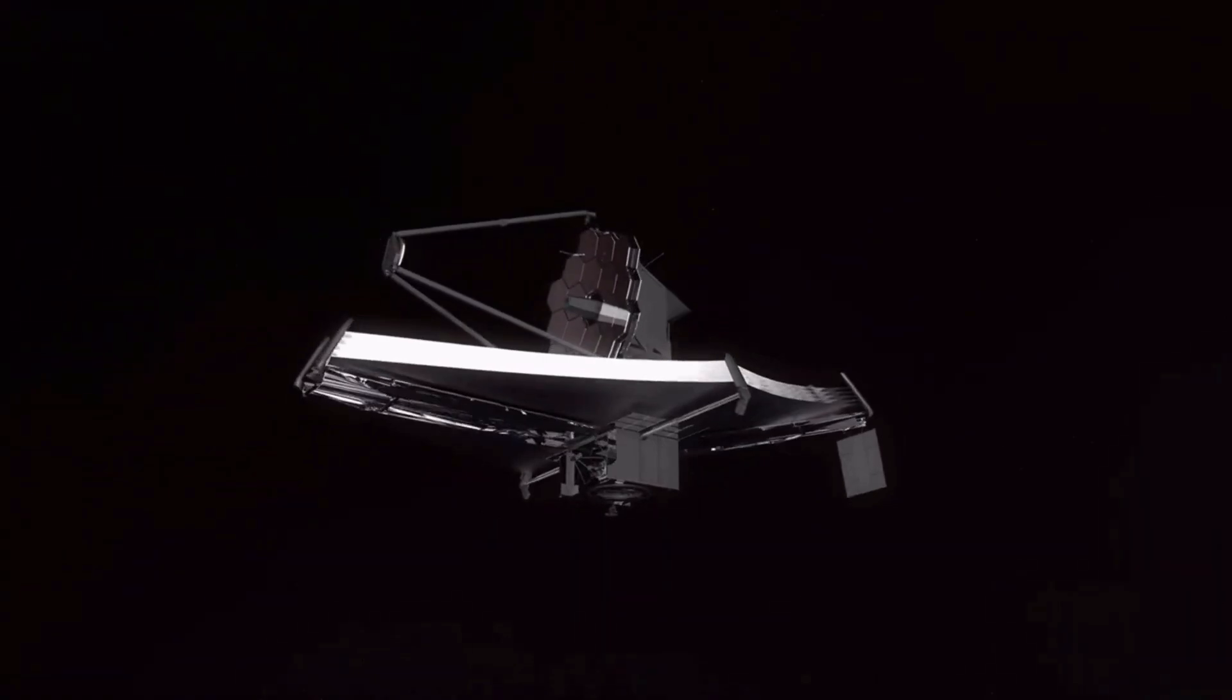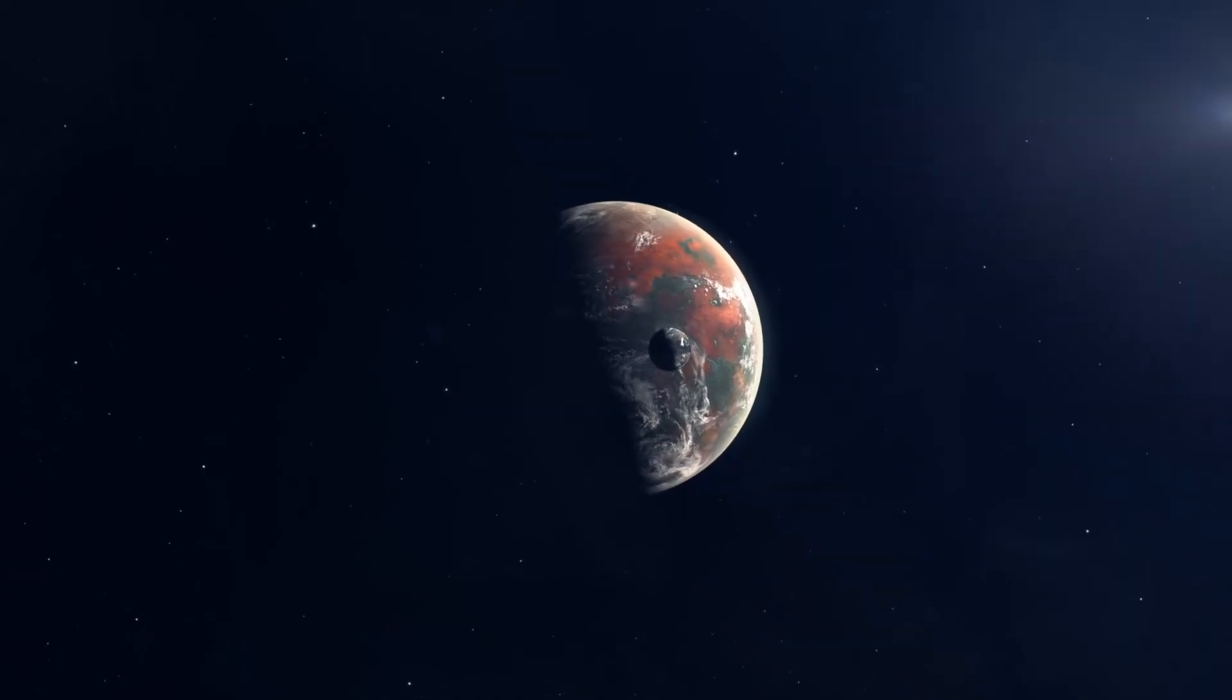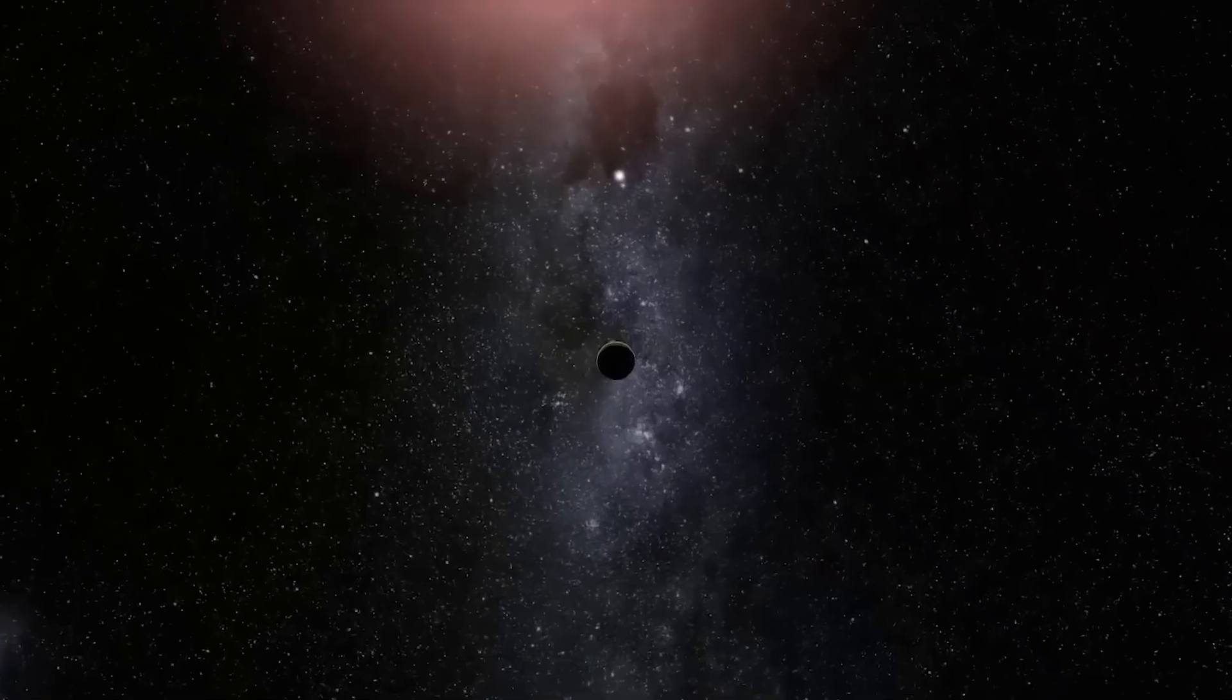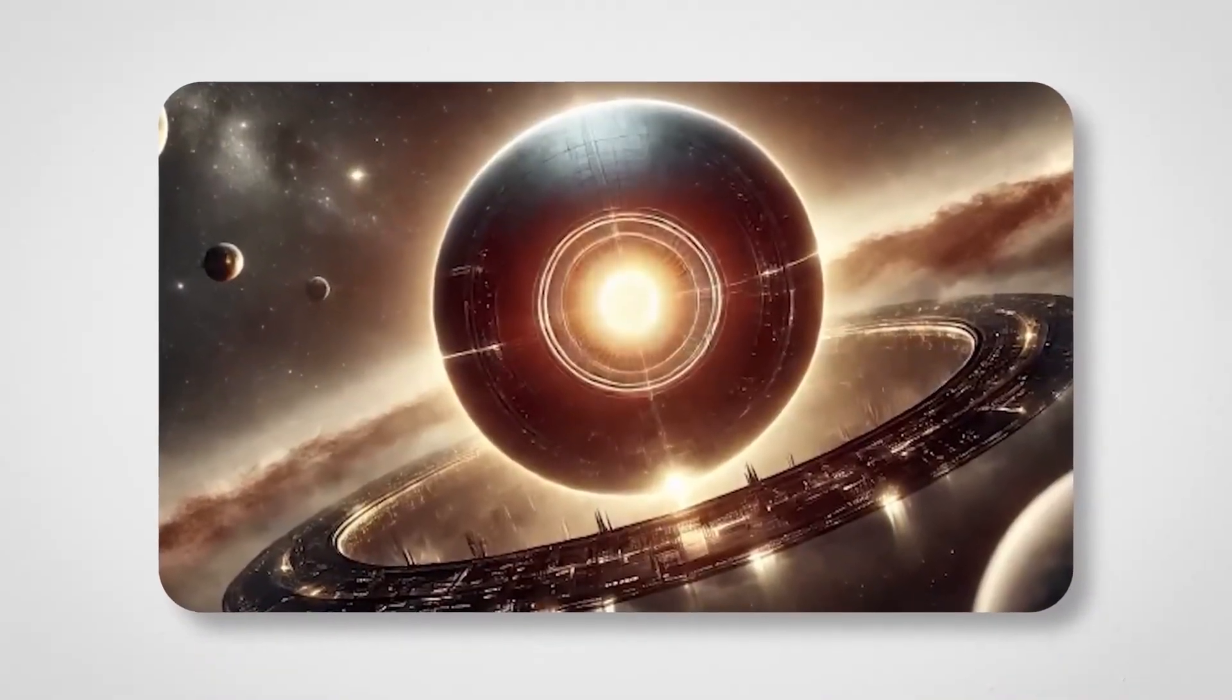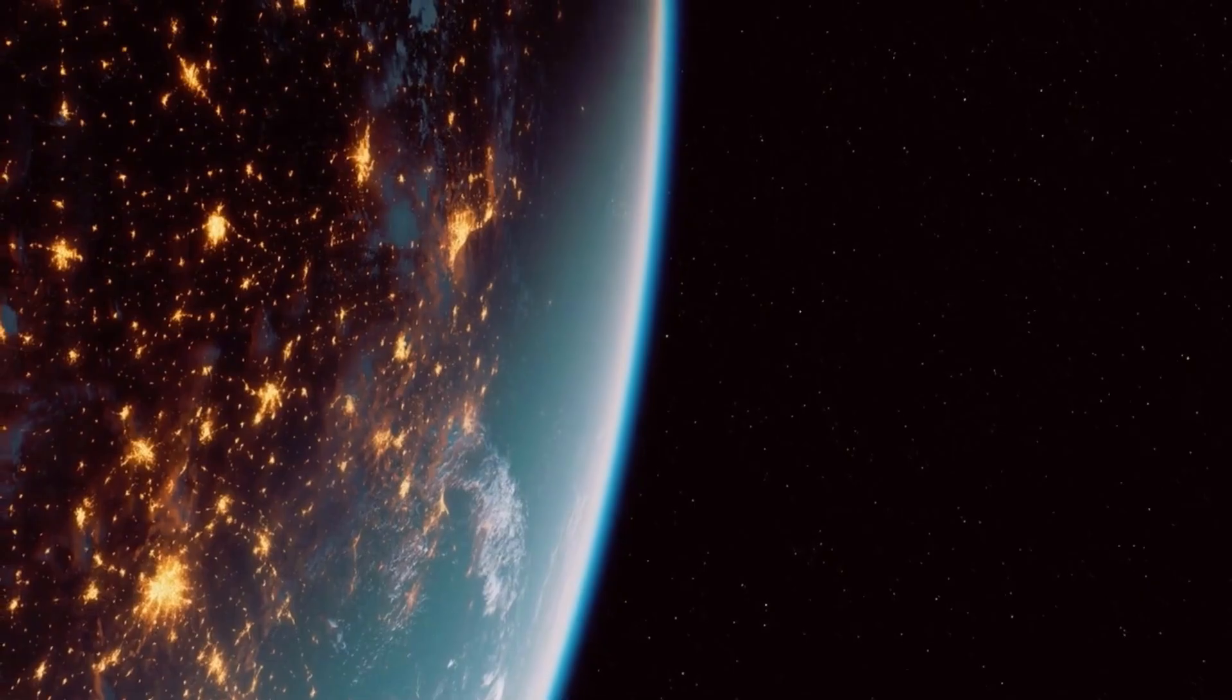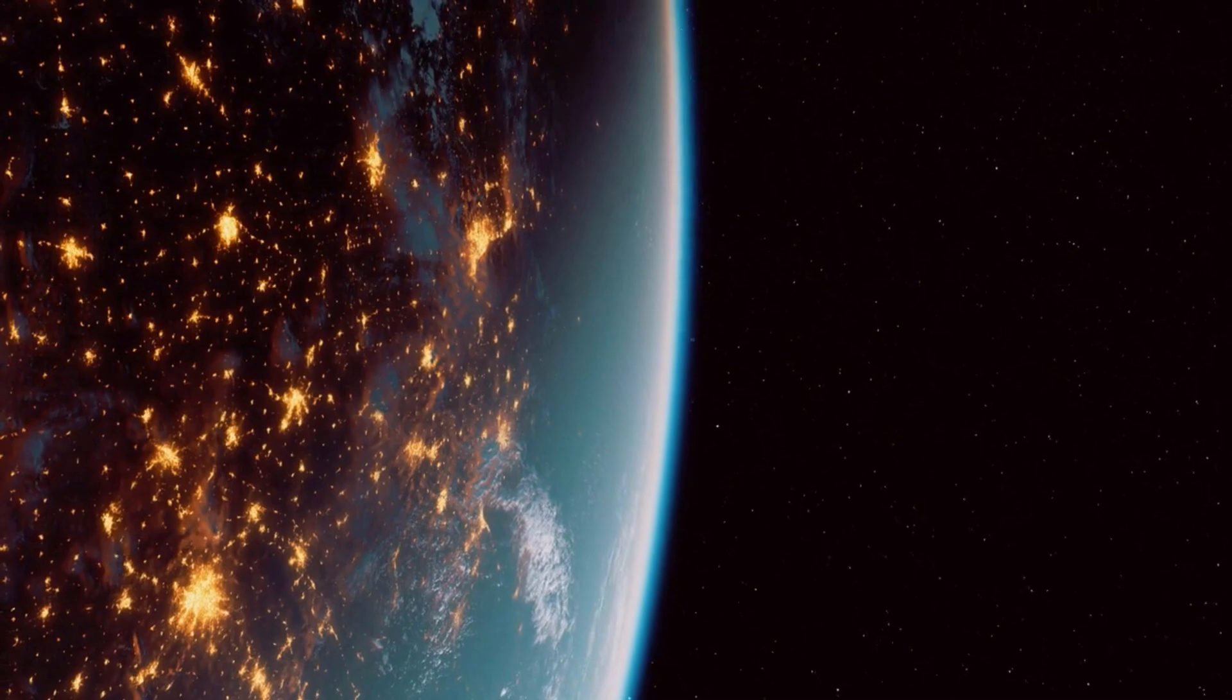If the Viking and Venera missions were impressive, the Voyager program was nothing short of epic. Launched in 1977, Voyager 1 and Voyager 2 rewrote the book on the outer planets. Voyager 1 captured stunning details of Jupiter and Saturn, including their moons and ring systems. Voyager 2 went even further, visiting Uranus and Neptune, the only spacecraft to ever do so. Along the way, they discovered 48 moons, active volcanoes on Jupiter's moon Io, and brand new planetary rings. Even after their primary missions ended, the Voyagers kept going, sending data from the edge of the solar system.